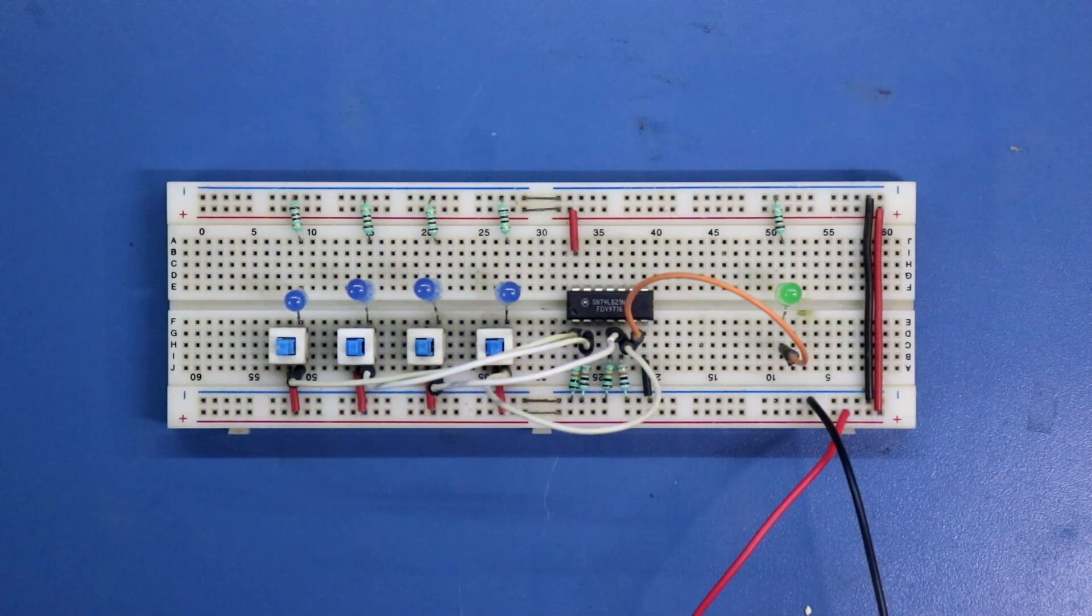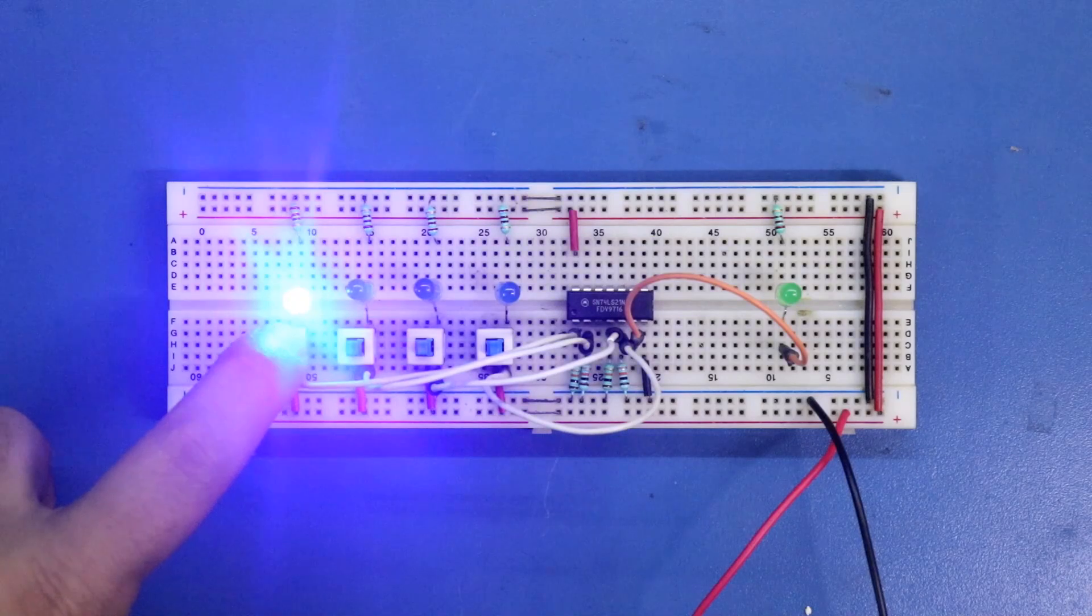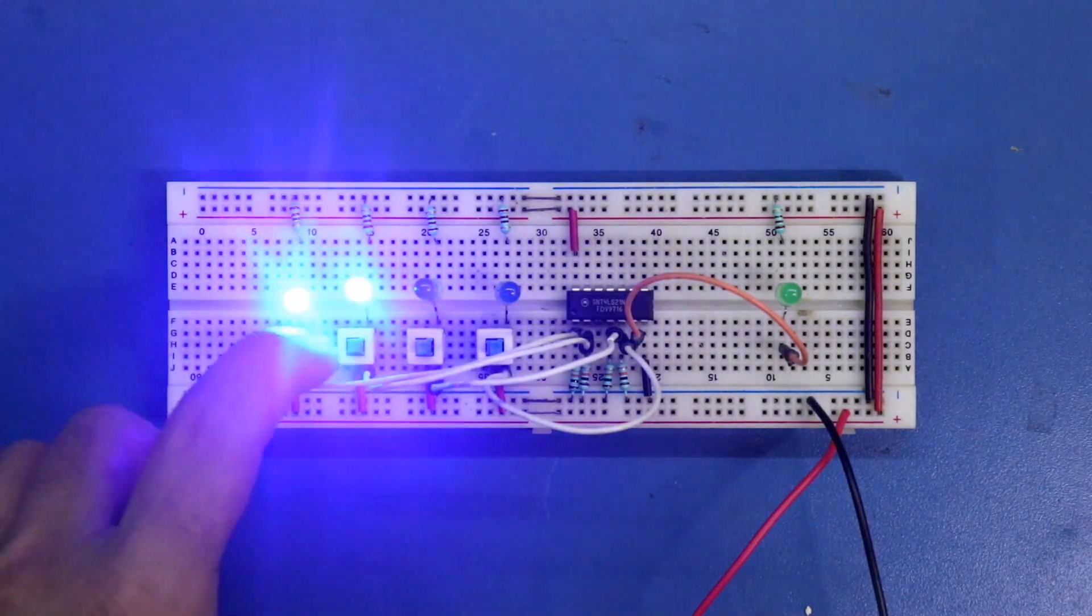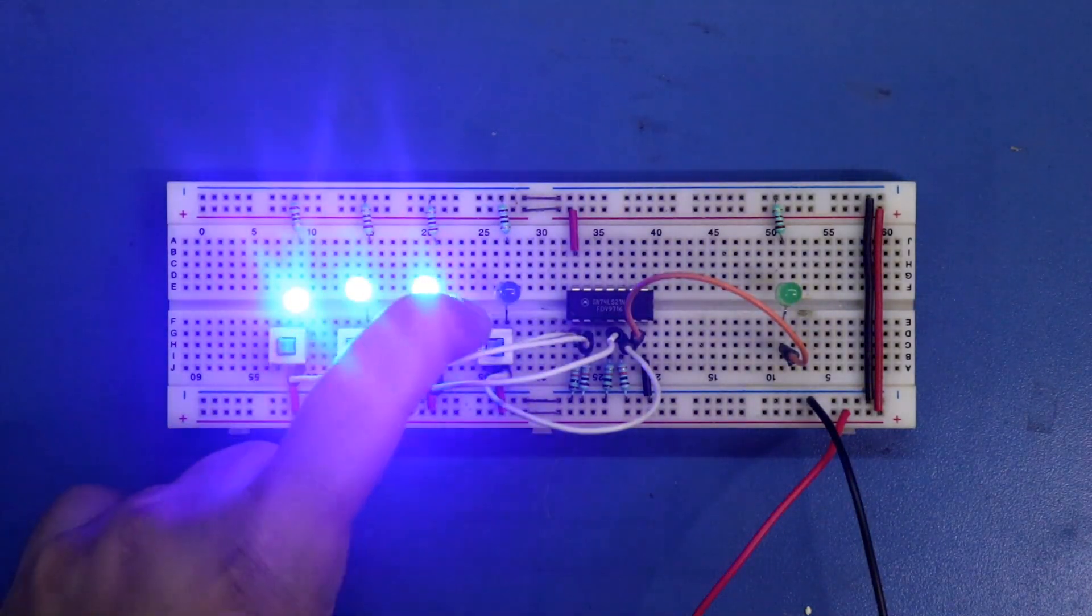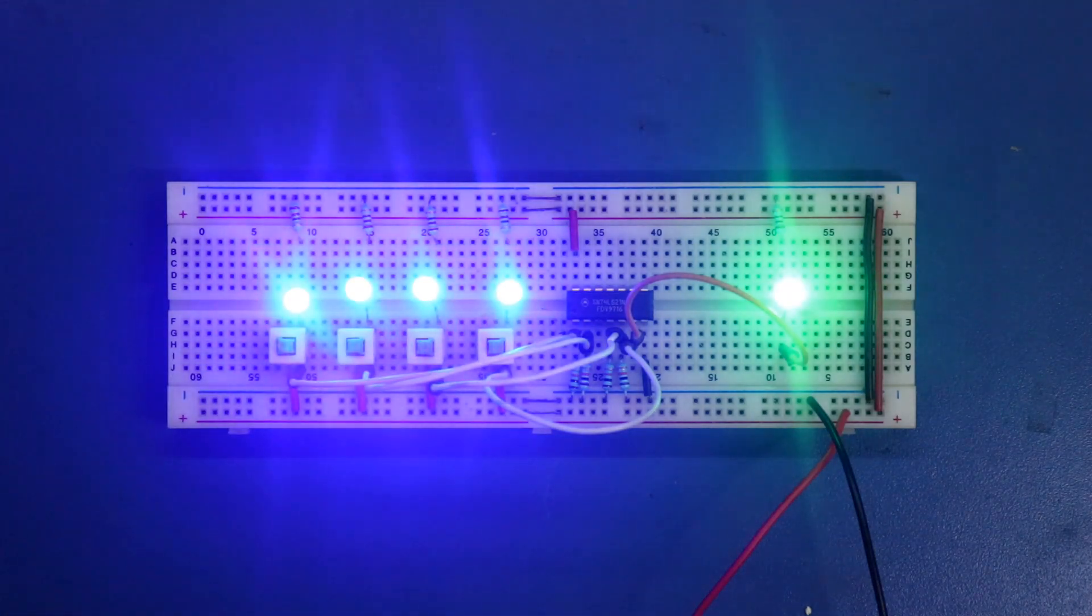This is AND gate so whenever all the inputs are one then only we will get one as our output. This one, one, one, one. And this is how we will get one as our output. So this is how AND gate works.